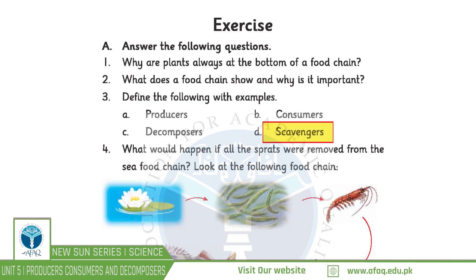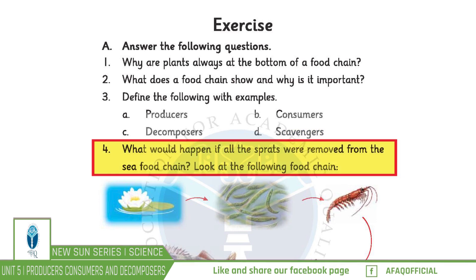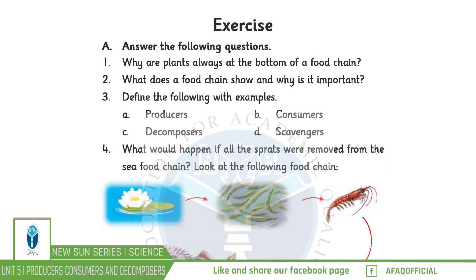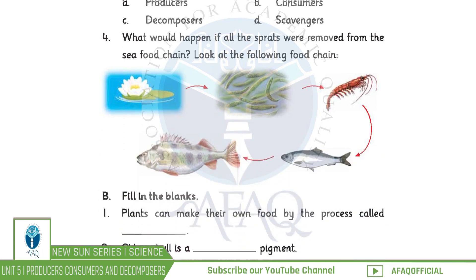Scavengers — animals that feed on dead organisms are called scavengers. Question number 4: If all the spots were removed from the food chain, the population of the daffodils in the sea would be huge and the number of scorpions would decline. As a result, the whole food chain would get disturbed.